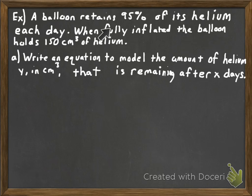Let's point out what we need here. If a balloon retains 95 percent of its helium each day, then it loses a certain percent of its helium each day. Hopefully you recognize that is 5 percent, so our decay factor or decay rate is 5 percent, which in decimal form is 0.05.